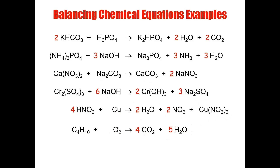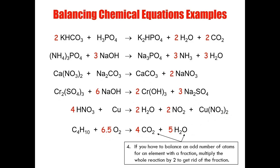Let's see if it self-resolved. I have eight plus five, which gives me thirteen. Now thirteen and two — that did not resolve my problem. The quickest way to balance this is: what can I multiply by two to give me thirteen? 6.5 multiplied by two gives thirteen. But you cannot have a fraction as a coefficient, so that brings us to rule number four: if you have to balance an odd number of atoms for an element with a fraction, multiply the whole reaction by two to get rid of the fraction. By multiplying the whole reaction by two, I get rid of my fraction and now I've balanced my chemical equation.